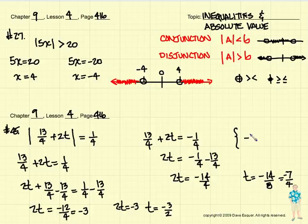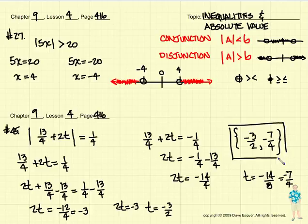So for number 45, we have two solutions. Those values would be negative 3 halves and negative 7 over 4. Again, we have two solutions. Let's just make sure it's a little bit clearer. We have negative 3 halves and negative 7 over 4. So those are solutions for those two problems.